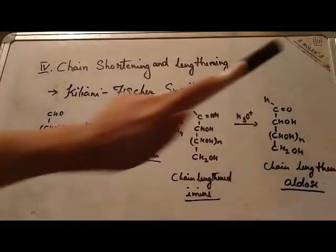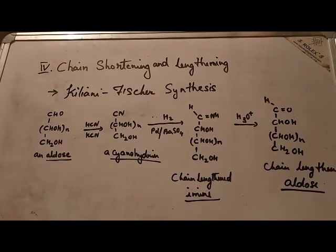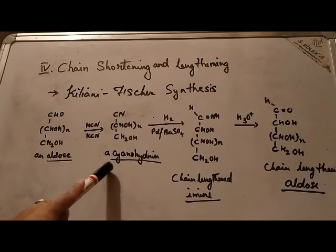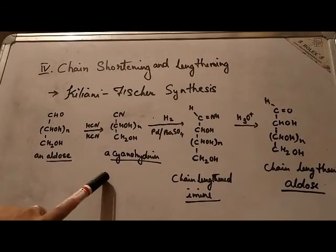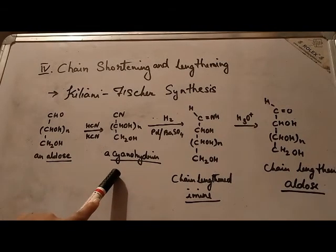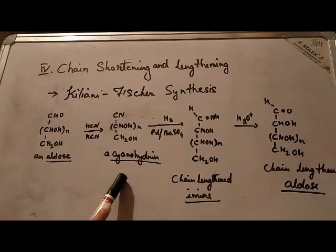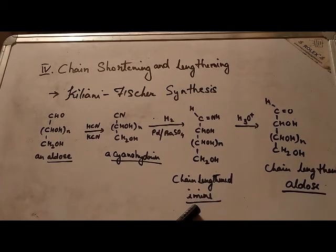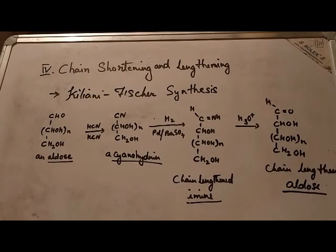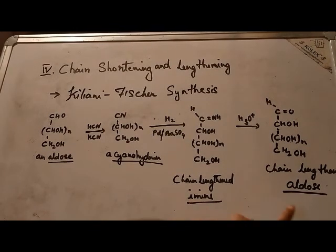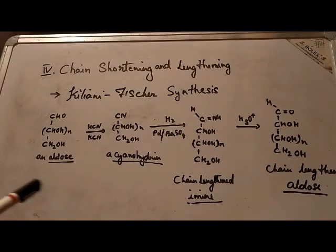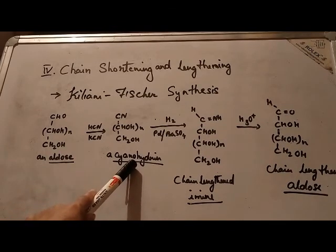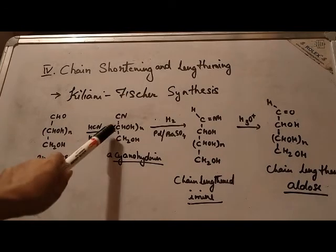The Kiliani-Fischer synthesis lengthens an aldose carbon chain by adding one more carbon atom to the aldehyde end — not anywhere else, but specifically to the aldehyde end of the aldose. In this synthesis, a cyanohydrin molecule forms as a mixture of compounds — two diastereomers. Thus we get two diastereomeric imines and finally two diastereoisomeric aldehydes.